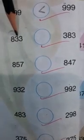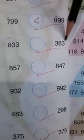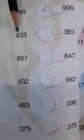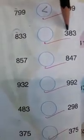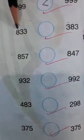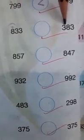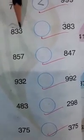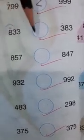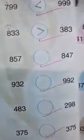Now 833 and 383. In the 100s place we have 800 and 300, and 800 is bigger than 300. So 833 is greater than 383.